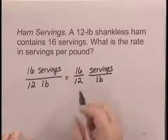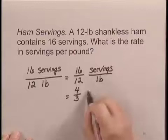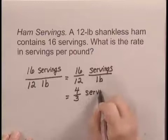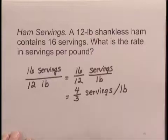Simplifying 16 over 12, we have 4 thirds, and then we can write this in horizontal form, servings per pound, or if you'd like to use a mixed numeral, 1 and 1 third servings per pound.